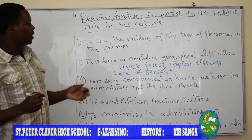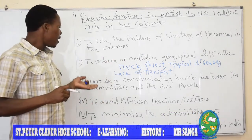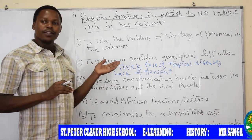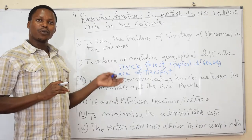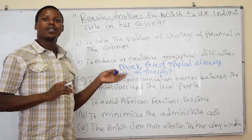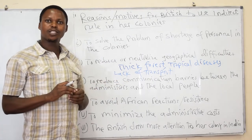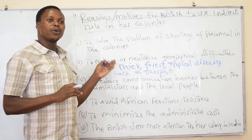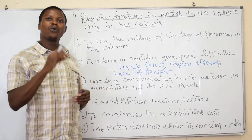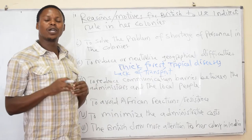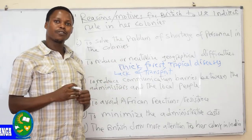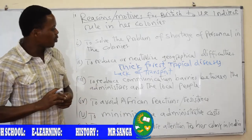Another motive was to reduce communication barriers between the European administrators and the local people. This was due to the barriers of language — some Africans did not know how to speak English. That's why administrators appointed chiefs who understood the Africans well, to help them as a bridge in making Africans work for the colonial governments.